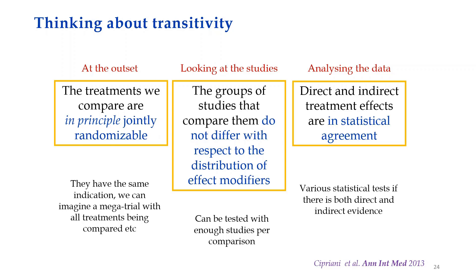Question: What happens if the transitivity assumption is doubtful? Would we have to stop the network meta-analysis? Answer: If we believe transitivity is likely to be violated, our results might be invalid. If we are not sure, we might continue with the analysis if we don't have very important concerns, but we should be very careful about how we draw conclusions — reporting all concerns and not drawing very strong conclusions about relative effects. If we have strong concerns about transitivity, we probably shouldn't analyze the data. It is analogous to the concept of clinical heterogeneity in a standard meta-analysis.